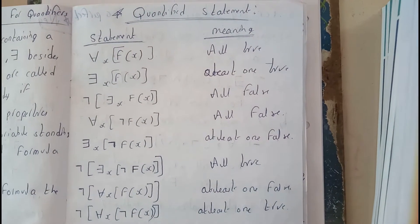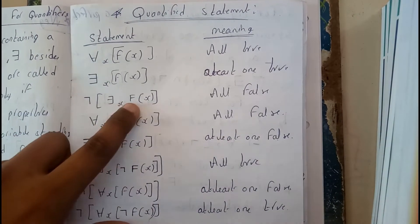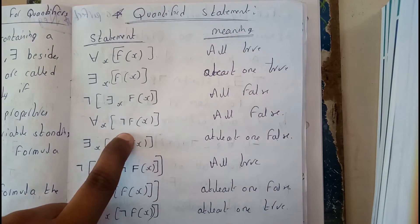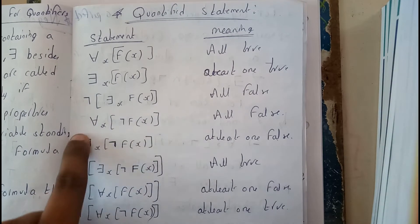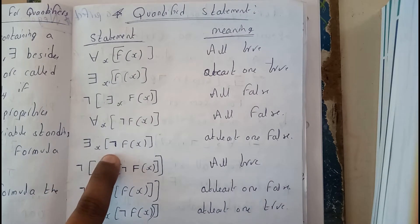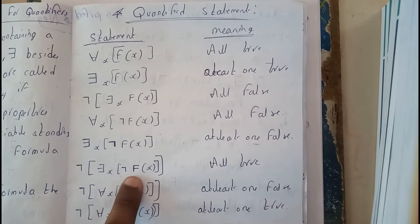Basically assume that the statement is true. So negation of this becomes for all. Negation of this becomes false. For all negation of true, that is false. All are false. Few are false. Negation of, negation of. All are true.